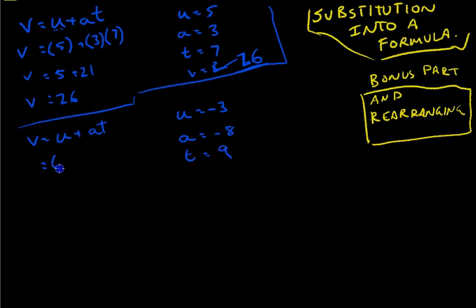Again, write this in brackets. U equals negative 3 in brackets, plus A, which is negative 8 in brackets, times T, which is 9. U is negative 3, plus negative 8 times 9, which is negative 72. So we have negative 3 plus negative 72. That's the same as negative 3 minus 72, or you could just type that directly into your calculator. That's going to give us negative 75.